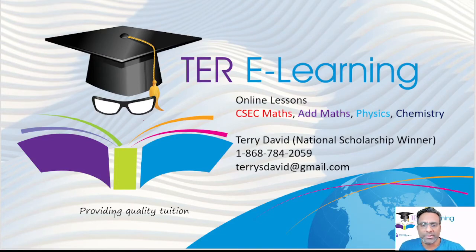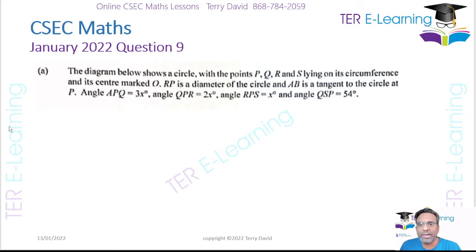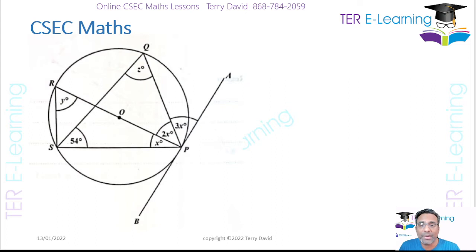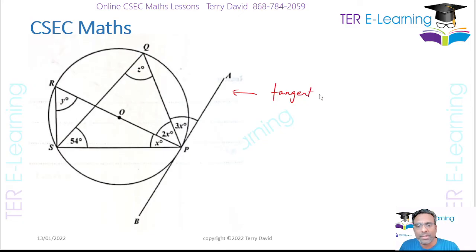Hi guys, Terry here again. I'm going to be looking at Question 9 in the January 2022 CSEC Maths paper. In Question 9, we have a diagram that shows a circle with points P, Q, R, S lying on the circumference, and it's marked that RP is a diameter. We also have a tangent shown in the diagram.